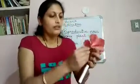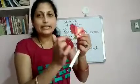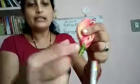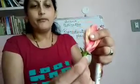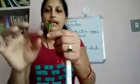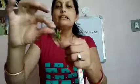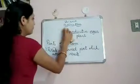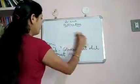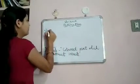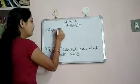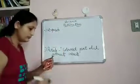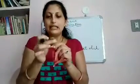The next part is the green colored part — these green leaf-like structures that you see here. These are called sepals. So, sepals are green leaf-like structures.